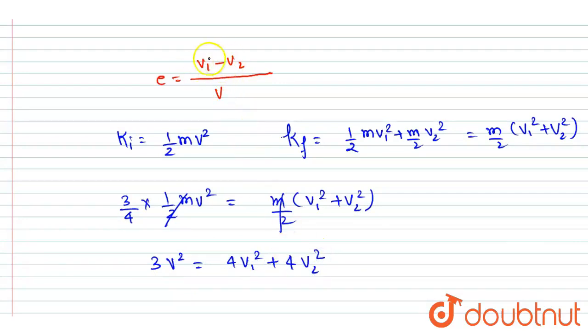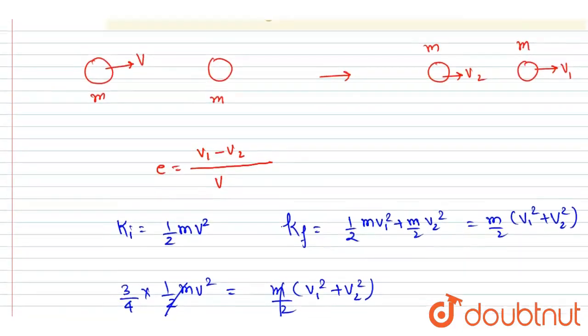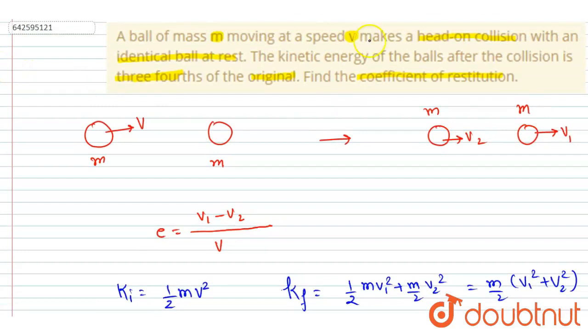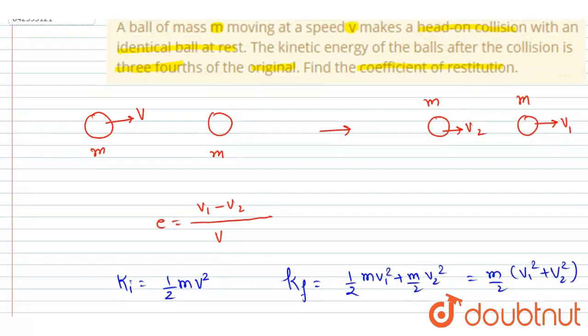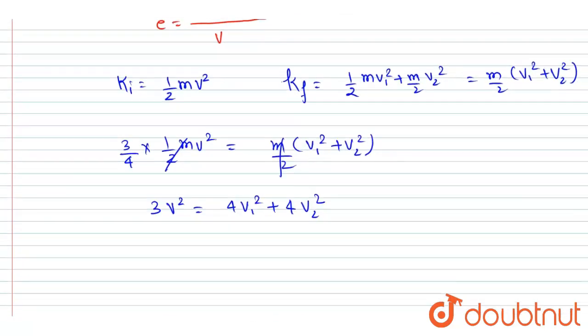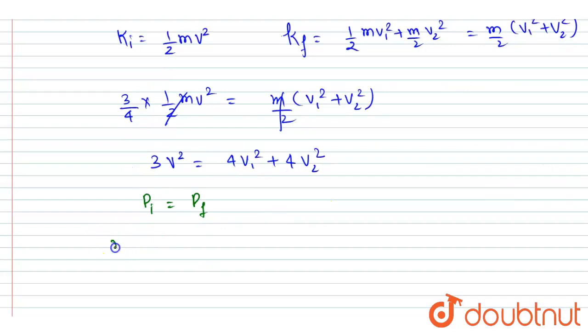Now we want v1 minus v2. So if you see in the question, there is no external force, so we can apply momentum conservation also. So let's apply that. We'll write here initial linear momentum is equal to final linear momentum. So initially the ball of m mass was moving with velocity v, and finally...